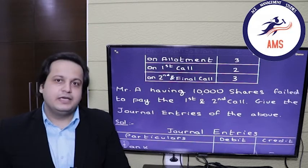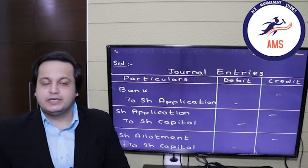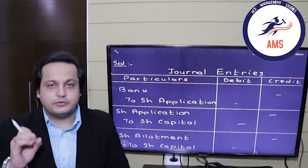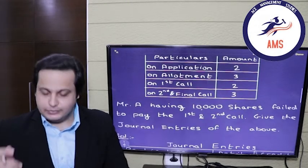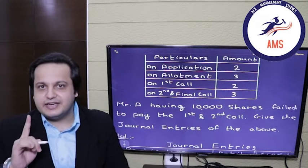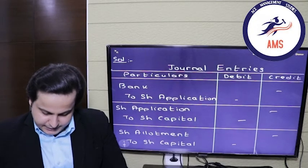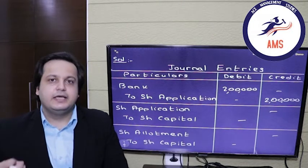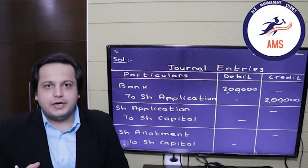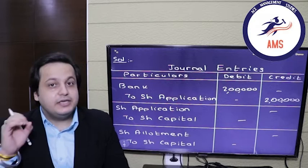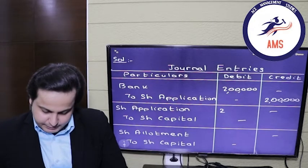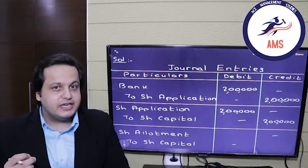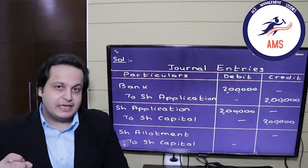Let's move forward with the journal entries for the first method using the call-in arrears account. First entry is for receiving the applications. The entry will be bank account debit to share application account credit. The amount is 1 lakh shares multiplied by the application money of rupees 2, so the total is 2 lakh rupees. Bank debited by 2 lakh, application credited by 2 lakh. Since there is no pro-rata allotment, we accept all applications, and transfer the amount to share capital. Application debited by 2 lakh, share capital credited by 2 lakh. The share application account now has a closing balance of zero.